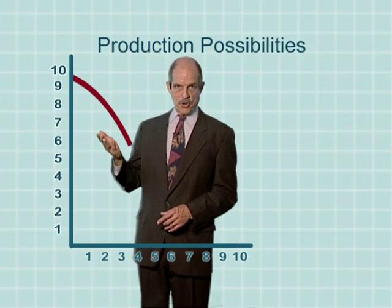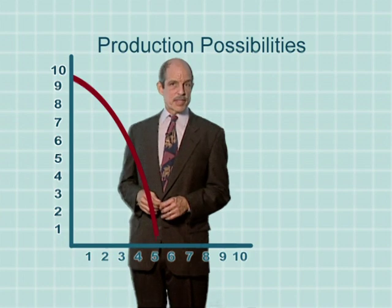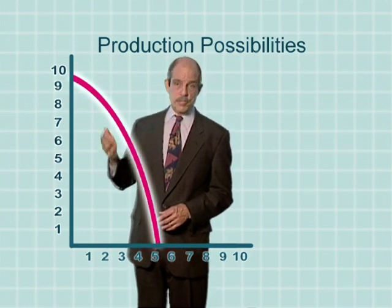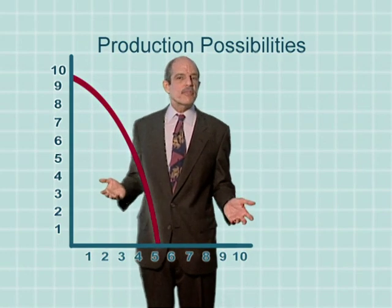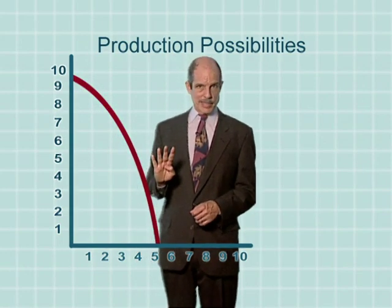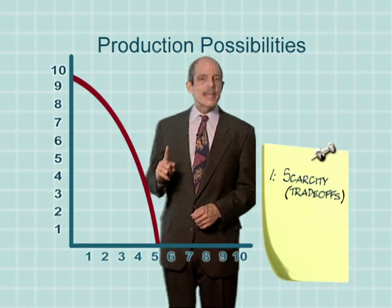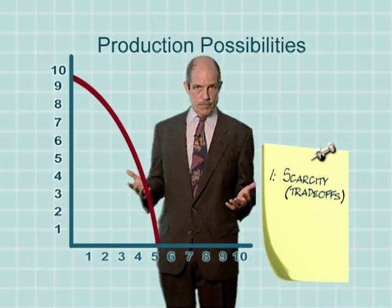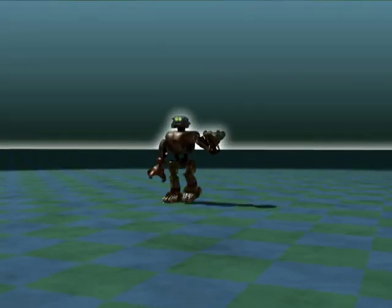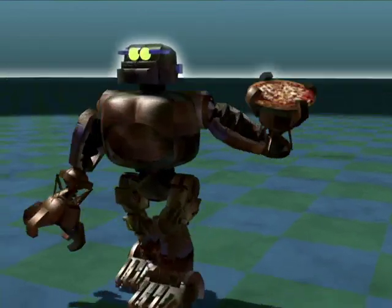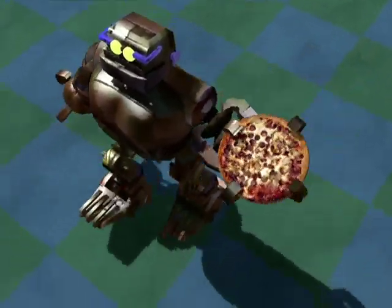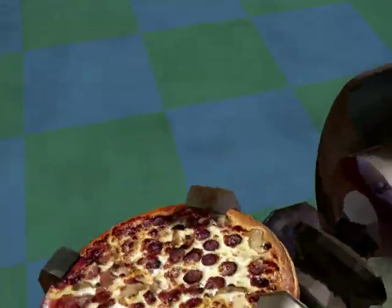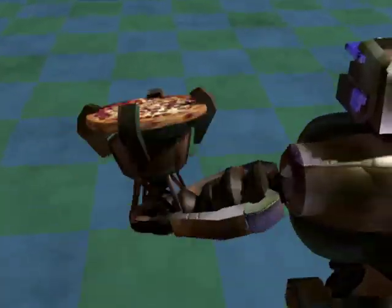The Production Possibilities Curve — a big favorite of economics textbooks, and for good reason. The Production Possibilities Curve, or frontier as it's sometimes called, turns out to be a very simple way to illustrate four very important economic ideas. First, it's another demonstration that economics is based on the idea of scarcity and trade-offs. Economists like to make their models as simple as they can, and it doesn't get much simpler than this.